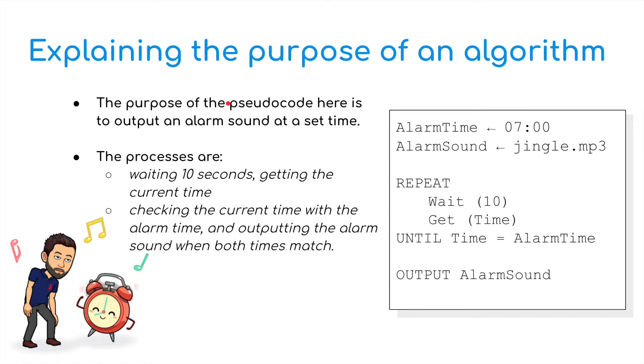The purpose of the pseudocode here is to output an alarm sound at a set time and see how exactly this works. The processes are waiting for 10 seconds and getting the current time, checking the current time with the alarm time and outputting the alarm sound when both times match. So we're going to assign the value 7am to the alarm time. We're going to assign a mp3 music file to alarm sound and then we've got a repeat until piece of pseudocode where we repeat, we wait for 10 seconds and then we get the time until the time is the same as the alarm time. Once that happens we can then output the alarm sound. So that's what's happening in terms of that particular algorithm, that particular piece of pseudocode.